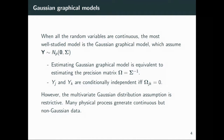However, the multivariate Gaussian assumption is restrictive. In my opinion, Gaussian should be an exception, not the rule — it's really rare to have data truly following a Gaussian distribution. Many physical processes generate continuous but non-Gaussian data, so non-Gaussian data should be the rule.